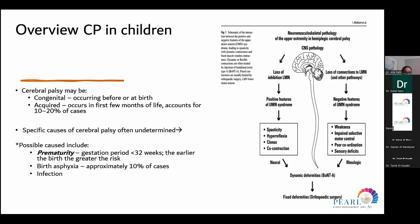Prematurity and low birth weight are among the greatest risk factors to develop cerebral palsy. There are three main categories of classification. First, by anatomical location: one limb is monoplegia, two limbs on one side is hemiplegia, two lower limbs is diplegia, and four limbs is quadriplegia. In terms of motor abnormality or physiologic function, we have spasticity as the majority, dyskinetic including dystonia or choreoathetosis, ataxia, hypotonia, or a mixed type.